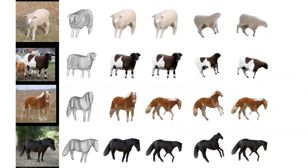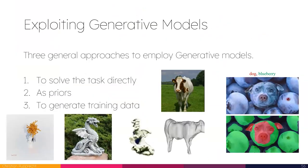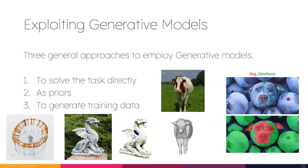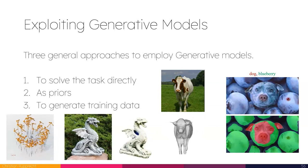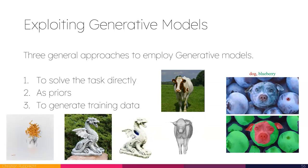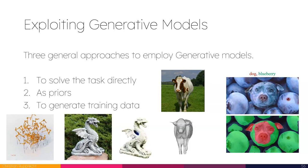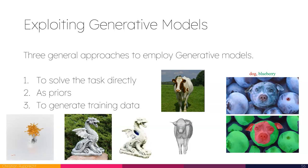This brings me to the end of the talk. I've talked about the three main ideas that I think are independent of the type of generative model and how to use them for downstream vision tasks. One: solve the task directly. Two: use them as priors, exploiting a model trained at large scale to extract information for the model you are training. Three: generate training data for tasks where it's hard or expensive to collect data — which has now become possible with high-quality generation. Thank you very much for your attention, and I'm happy to take questions.